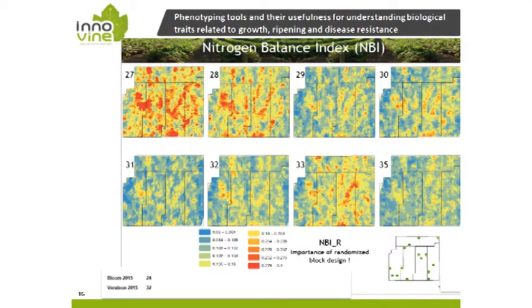Here I show an example of what was done for the biomass index using the multiplex sensor at different times of development — bloom was at week 24 and we went up to week 25. Red indicates high biomass, blue indicates low biomass. It's very important to use a block system because even in a collection planted on a single block you may have different responses — one block clearly differs from the block right next to it — so if you phenotype only a single block from a collection you are not sure of the result.